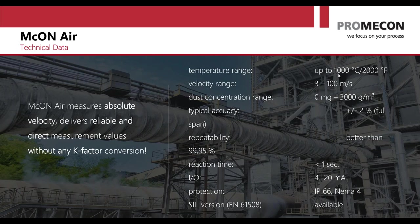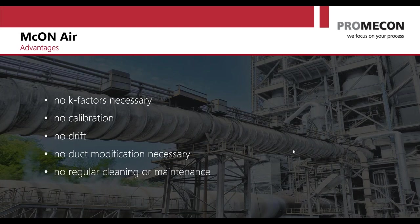Key specifications: temperature range up to 1000°C, velocity range 3 to 100 meters per second — a huge turndown ratio — dust concentration range from zero milligrams up to 3000 grams per cubic meter, typical accuracy ±2%, and repeatability best in class. Recently a German authority certified this as the most repeatable instrument they'd ever tested. Update time is less than one second, IP66/NEMA 4 protection, and available as SIL2 for power stations. No K-factors, no calibration, no drift — the only duct modification is welding on mounting lugs from the outside.